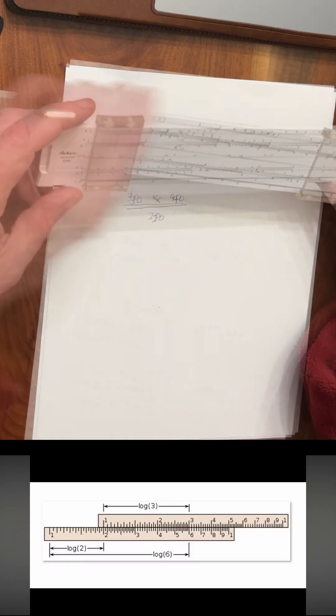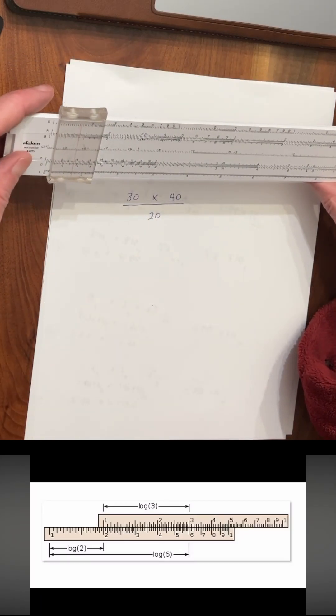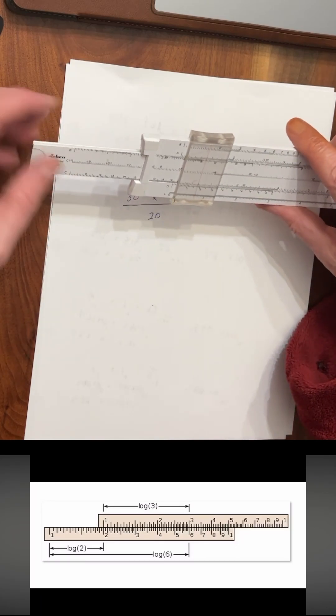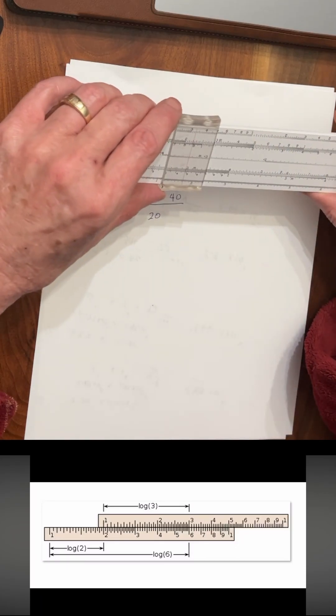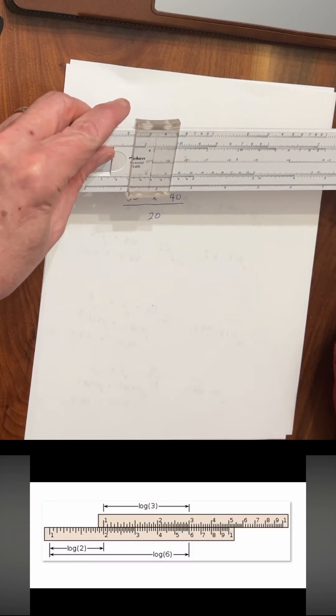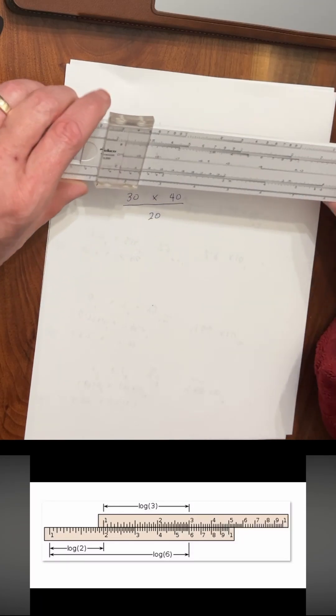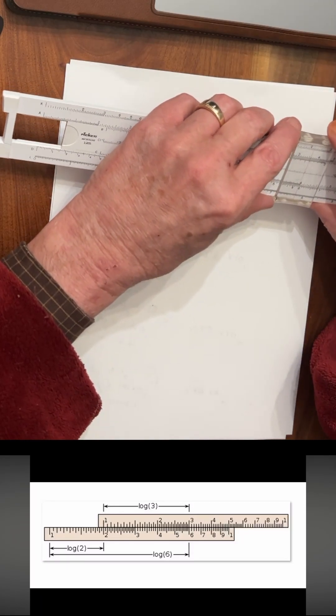So let's divide 1 by 20. Okay, so there's 1, 2, and 3, 4.